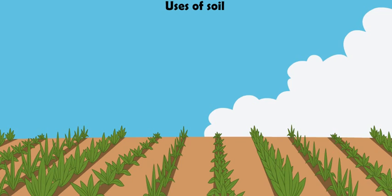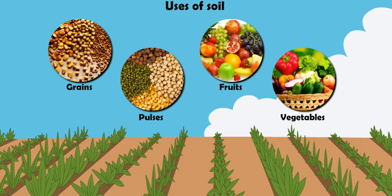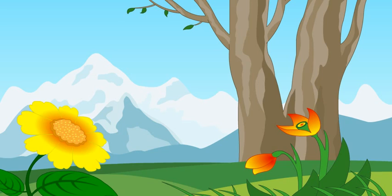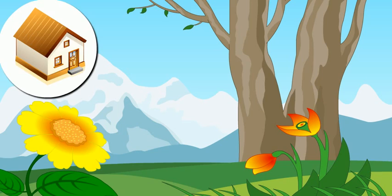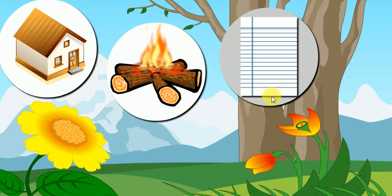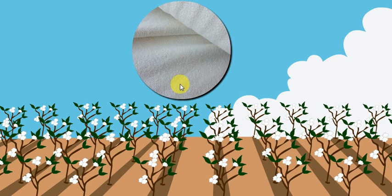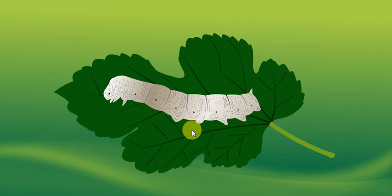Uses of soil: One, soil is used for growing food like grains, pulses, fruits and vegetables. Two, soil is used to grow trees for obtaining wood for building purposes, timber for burning as fuel, firewood, and for making paper. Three, soil is used to grow cotton plants which give us cotton clothes.